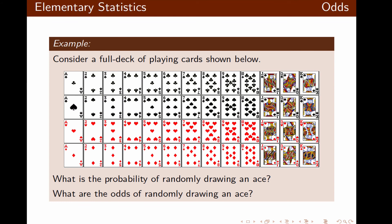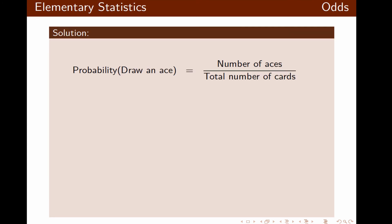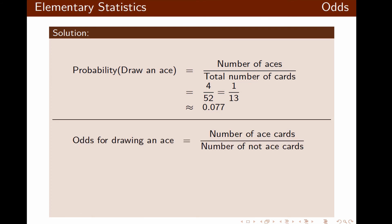Let's look at the full deck of playing cards once again. I want to know the probability of randomly drawing an ace, and also the odds of randomly drawing an ace. The probability of drawing an ace is the number of aces divided by the total number of cards — 4 aces out of 52 cards — which reduces to 1 over 13, or approximately 0.077 in decimal form.